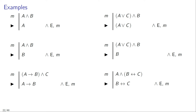Here are a few applications of the rule conjunction elimination. If in line M of your proof you have the conjunction A and B, you can infer the first conjunct A, citing conjunction elimination applied to line M. Similarly, if in line M you have the conjunction A and B, you can also infer the second conjunct B, and again cite conjunction elimination to justify this inference.